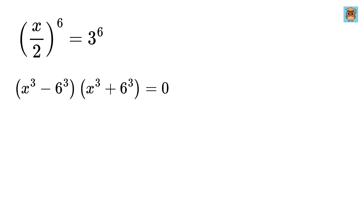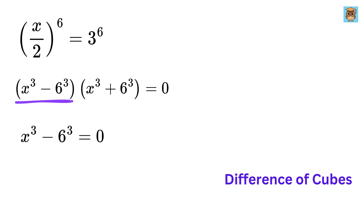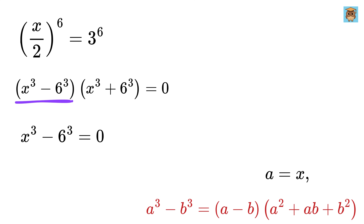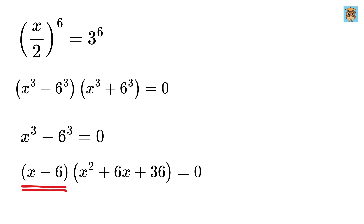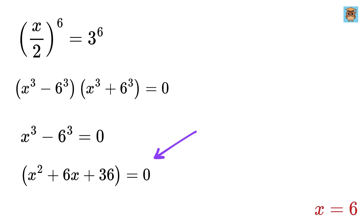We have now factored the original equation into two simpler expressions, so we solve each one separately. First, we look at x cubed minus 6 cubed. This is a difference of cubes. The difference of cubes formula states that a cubed minus b cubed equals a minus b, multiplied by a squared plus ab plus b squared. Setting a as x and b as 6, we rewrite it as x minus 6, multiplied by x squared plus 6x plus 36, equals 0. The first term gives the solution x equals 6.